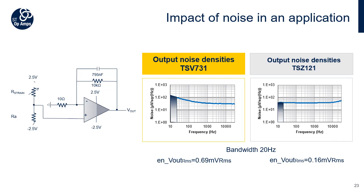The noise can also be expressed in VPP. In the case of the TSZ121, with a bandwidth limited to 20 Hz, the noise will be around 960 µVPP. It is a first-order noise calculation, as we have to consider a stop bandwidth with a very sharp edge. This means, in the worst case, roughly 600 µV of error might be added to the output value caused by the noise.